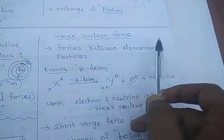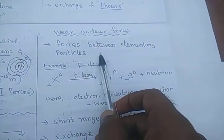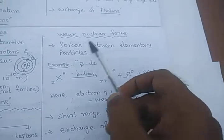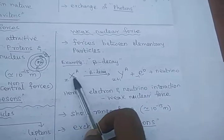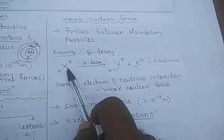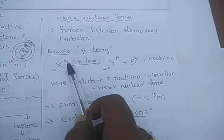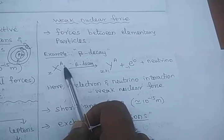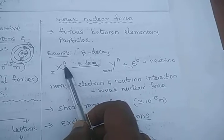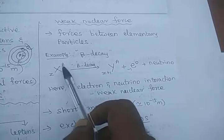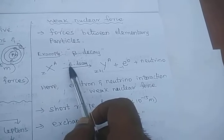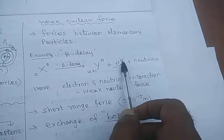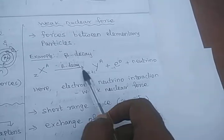Now we are going to see the weak nuclear force. These forces are between the elementary particles. Let us consider some element X with an atomic number and mass number. Atomic number means the number of protons or electrons; mass number means number of protons plus number of neutrons. Whenever some element undergoes beta decay, it emits one electron, and this atom becomes a new element.